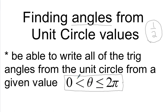So this is our domain: 0 < θ ≤ 2π. We're never going to have zero as an answer, but we can have 2π as the answer. Zero and 2π correspond to that same point on the unit circle, so we're going to say don't use zero as an answer — instead use 2π.